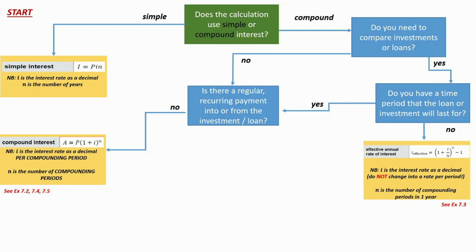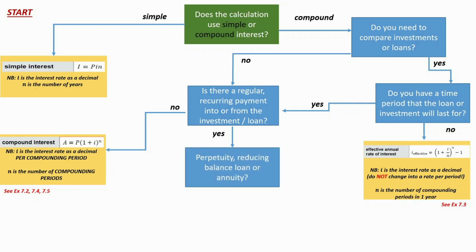Sadly, most of your complex questions in your exams are probably not going to be as straightforward as those. They're probably going to be something more complex, which means you're going to move to the 'yes' button — we do have a regular recurring payment coming in or out of the investment or loan. We're going to ask ourselves another question: is it a perpetuity, a reducing balance loan, or an annuity?